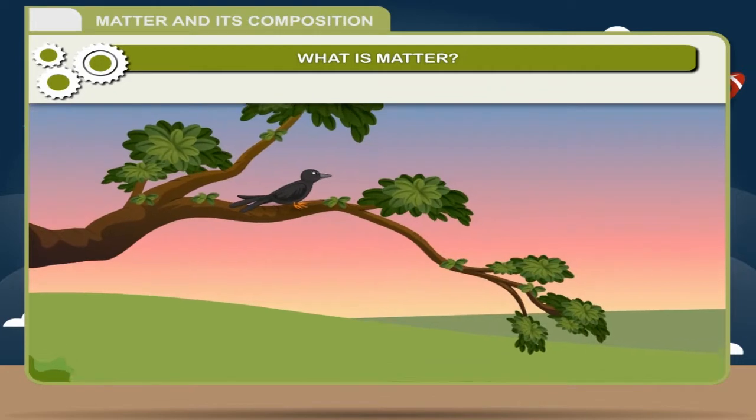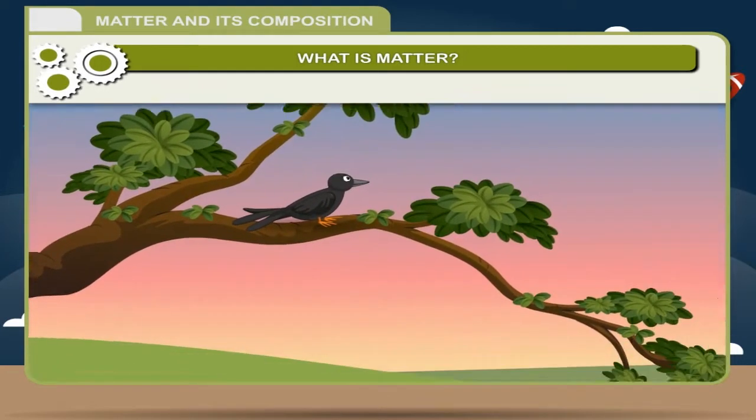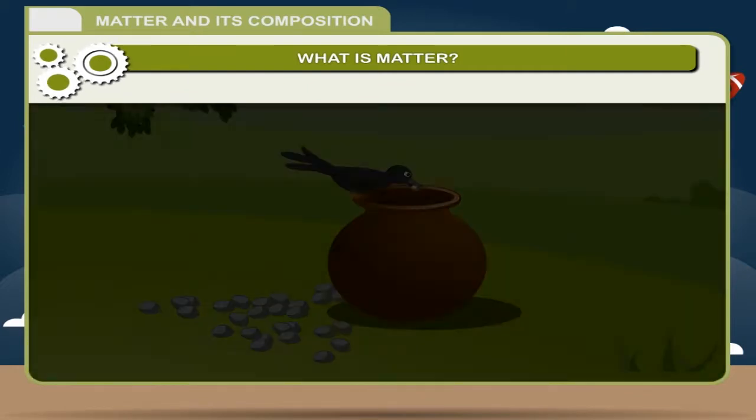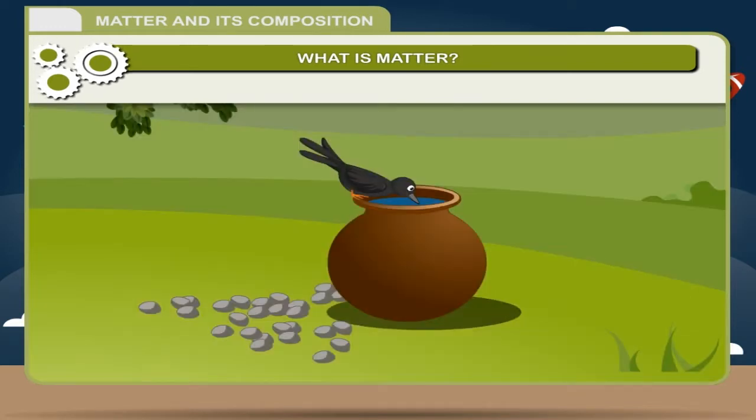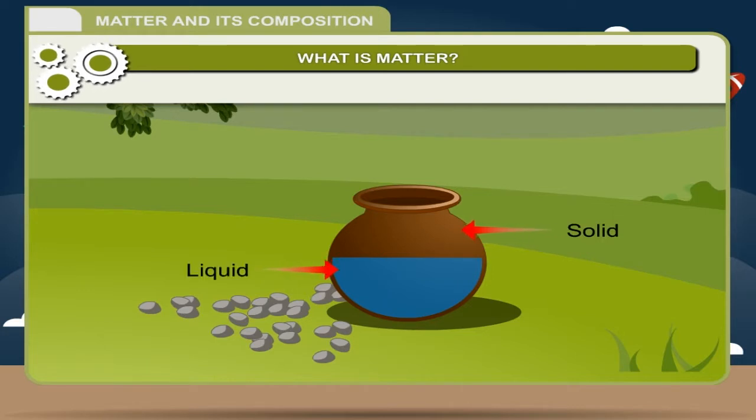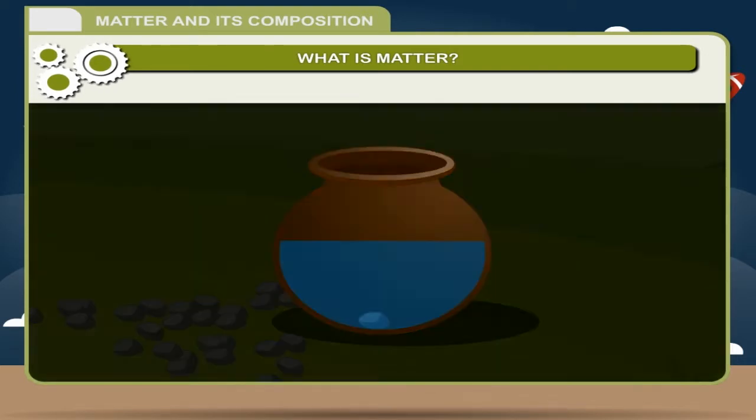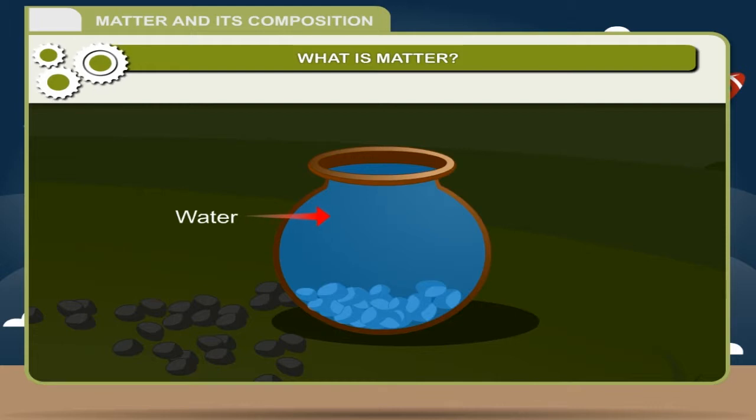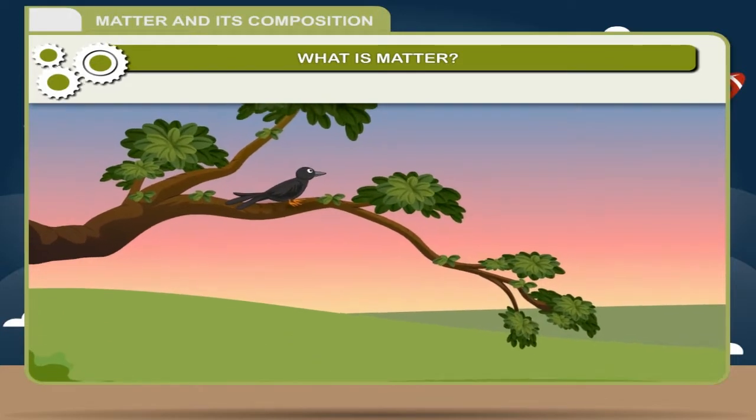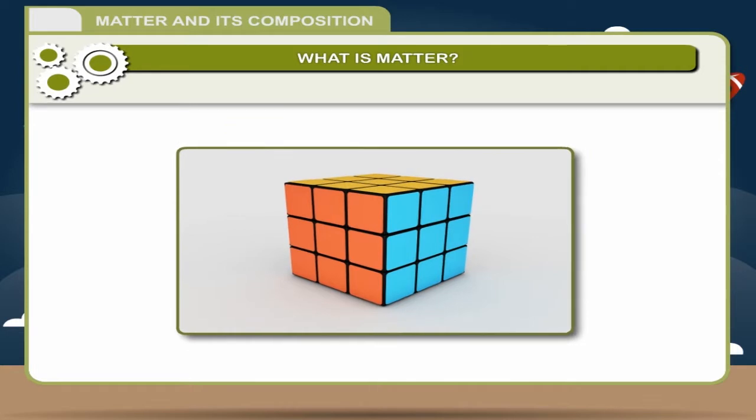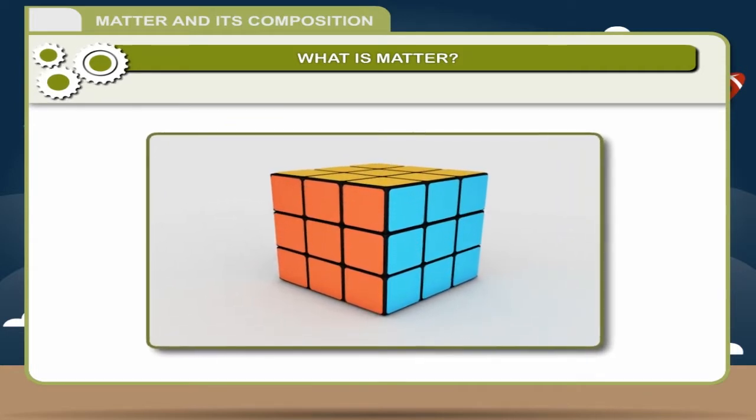Do you remember the story of the thirsty crow? The crow was thirsty and there was little water in the pot. So, the crow threw small pebbles in it to raise the level of water till the crow could drink it. This story proves that solids as well as liquids occupy space or have volume. The volume occupied by a solid is not available to the liquid and it has to occupy space elsewhere. Water was forced to rise up to occupy space above the pebbles. Therefore, everything is matter.